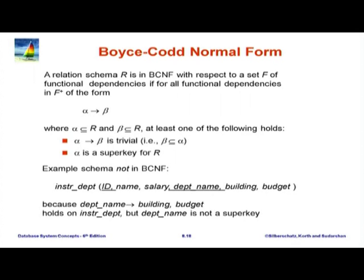The closure plays a very important role in defining various normal forms, because sometimes there are dependencies which are obvious, but then there are others which are not obvious but which you can infer. And those must also be taken into account when we check if something is in suitable normal form. So we are going to present a series of definitions: functional dependencies, closure, Boyce-Codd normal form, third normal form, and so forth. Then we are going to go back deeper into the process by which we do the inferencing and generate BCNF and 3NF decompositions.